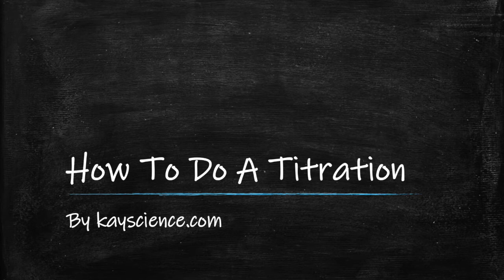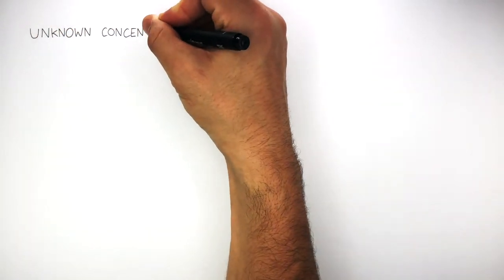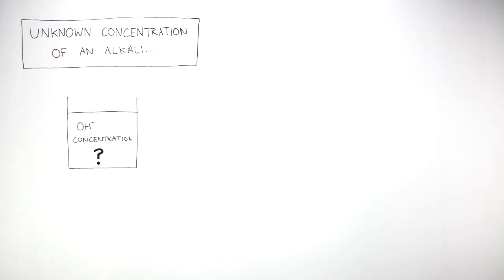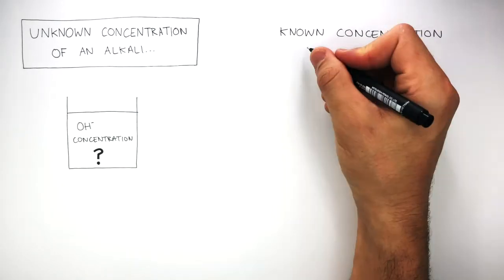How to do a titration by kscience.com. To do a titration we need to have an unknown concentration of an alkali where we don't know the concentration of this alkali and we have a known concentration of an acid.